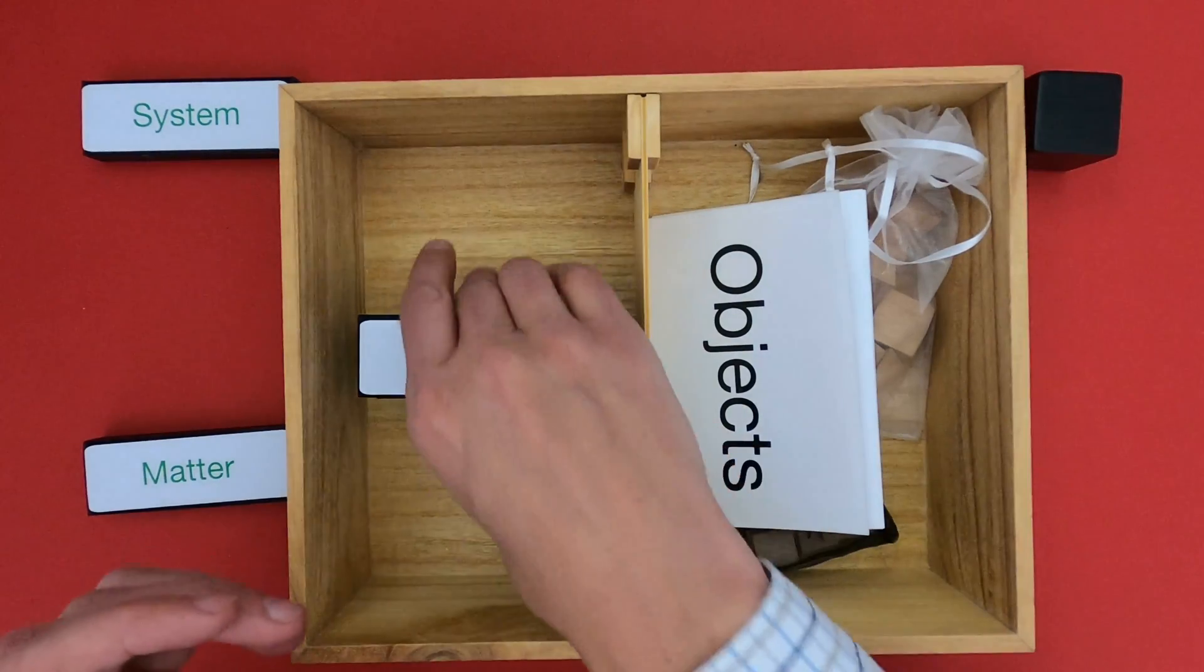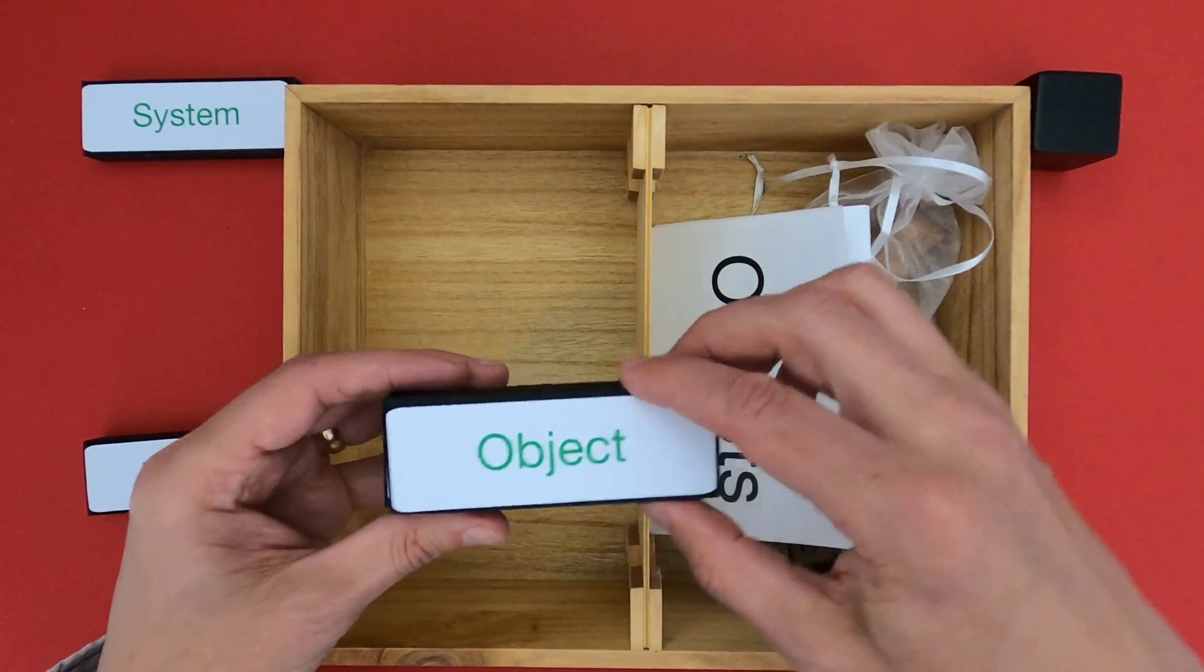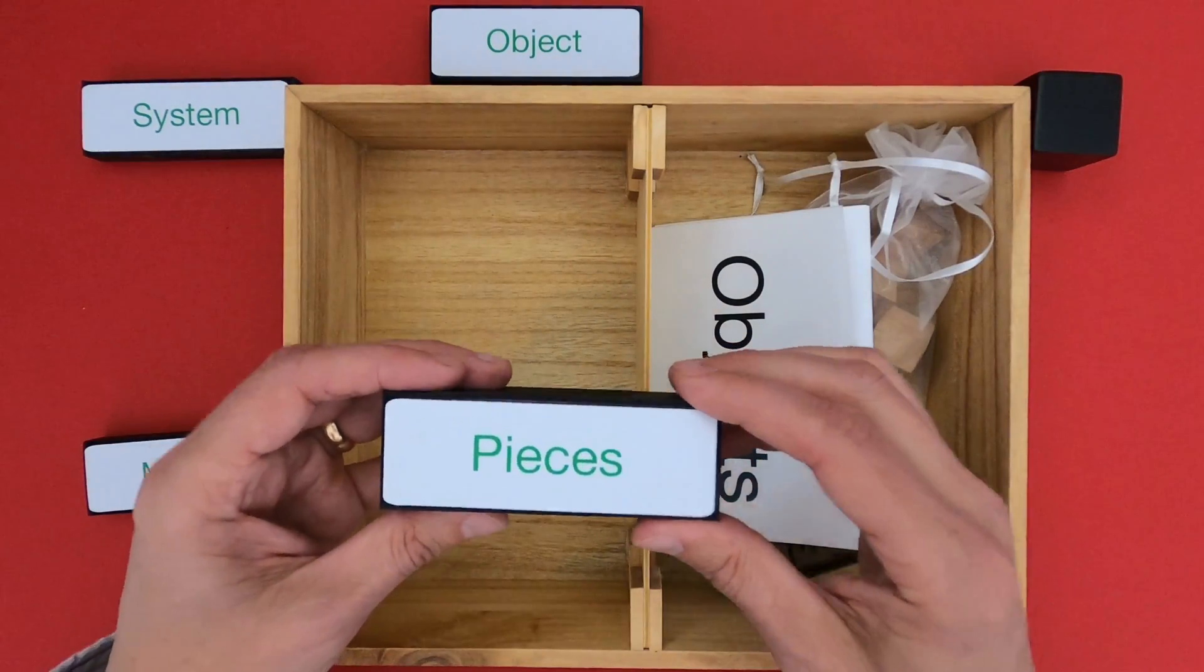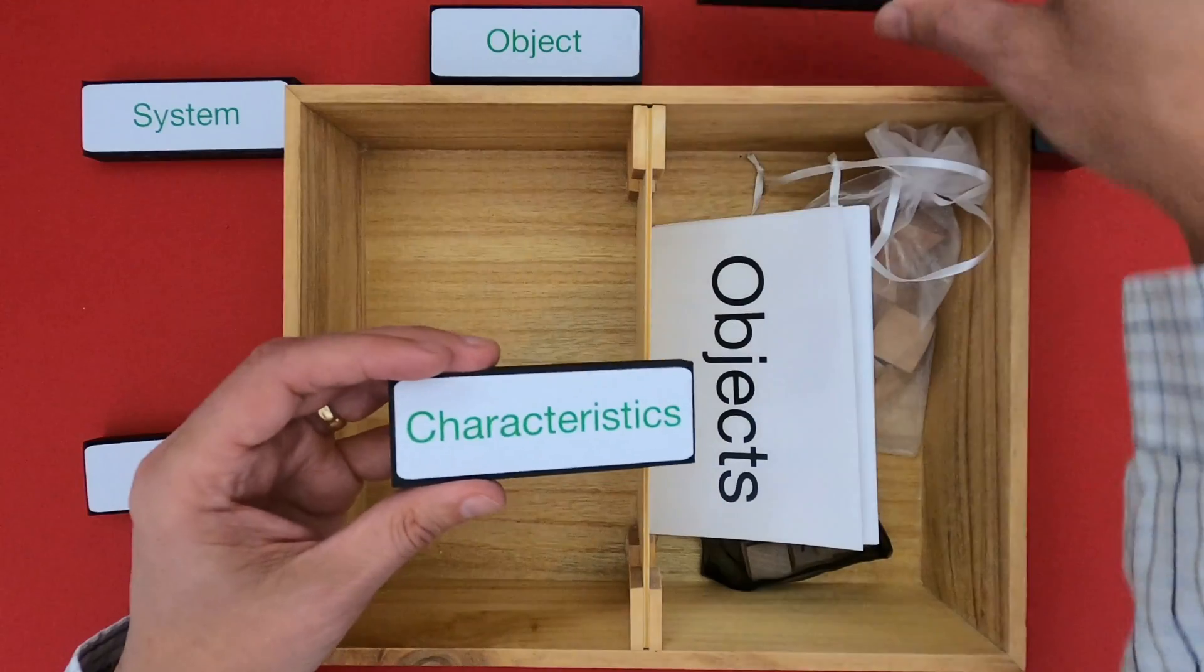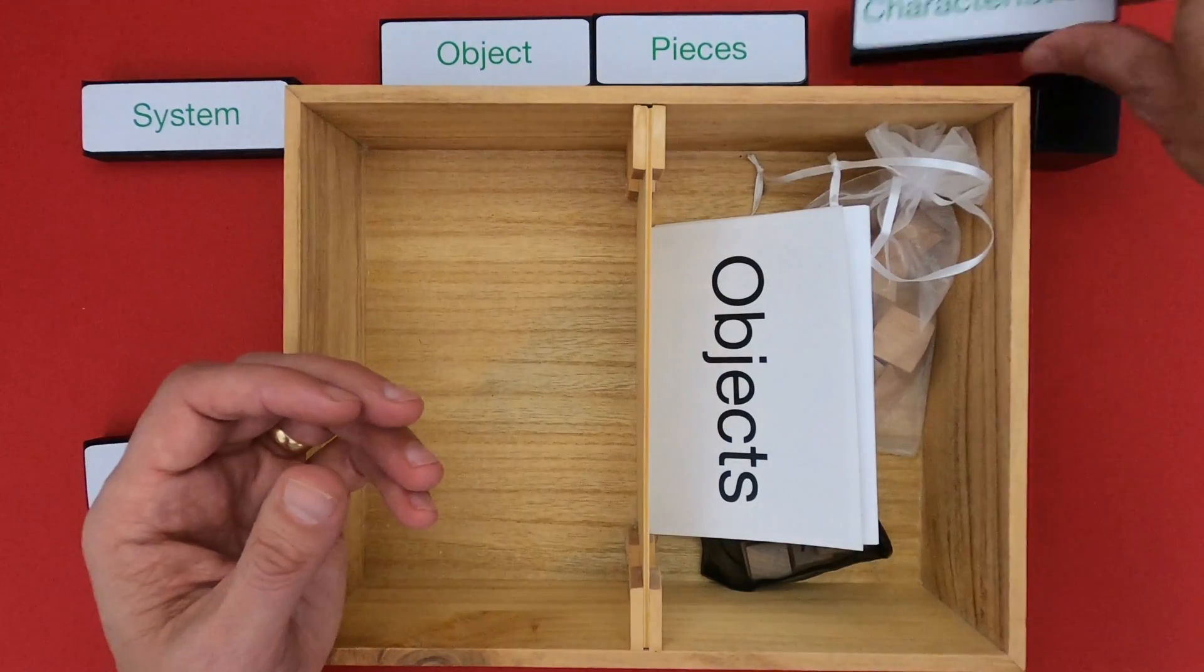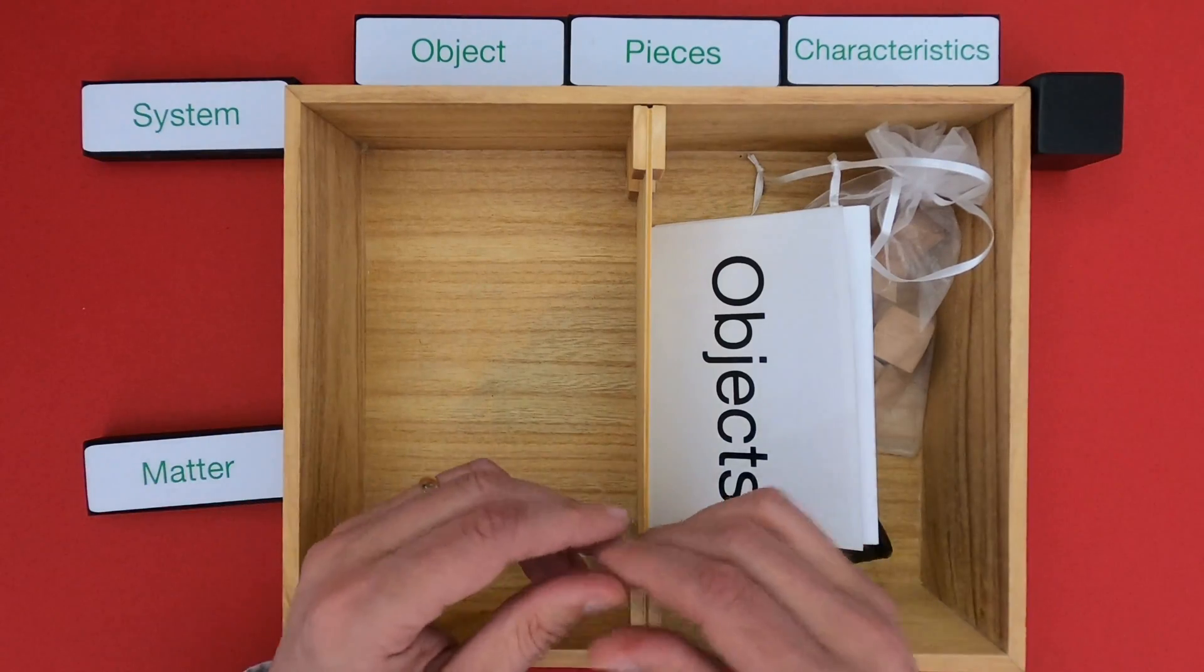To learn more about matter, we're just going to look at common-day objects that are made of matter, and we'll start to realize that all of those objects are made of smaller objects. We call those pieces, and if we put together the pieces of the objects in different order, then we're going to have different characteristics.